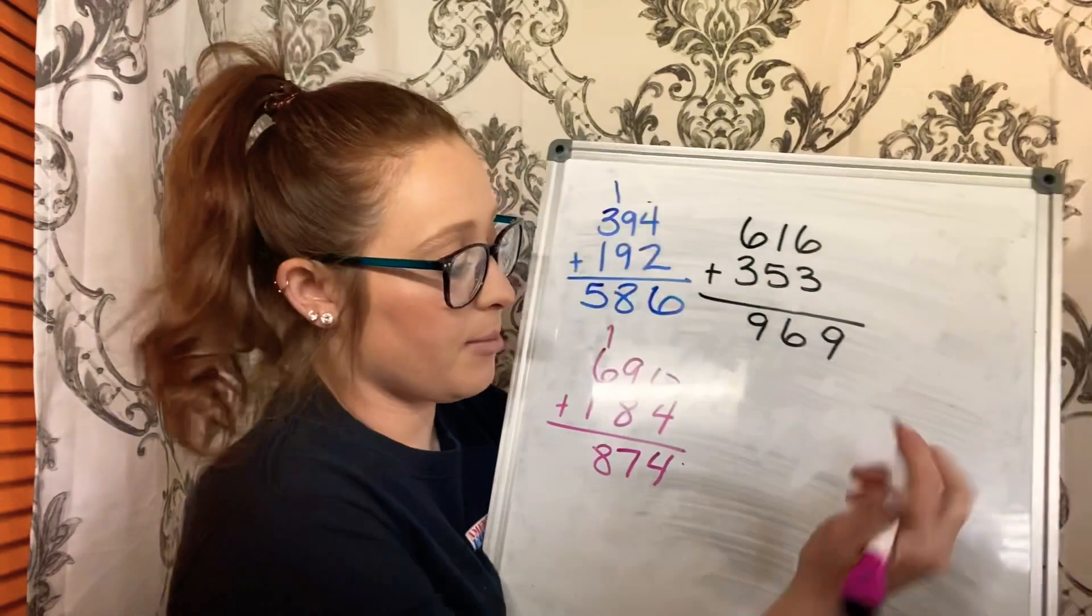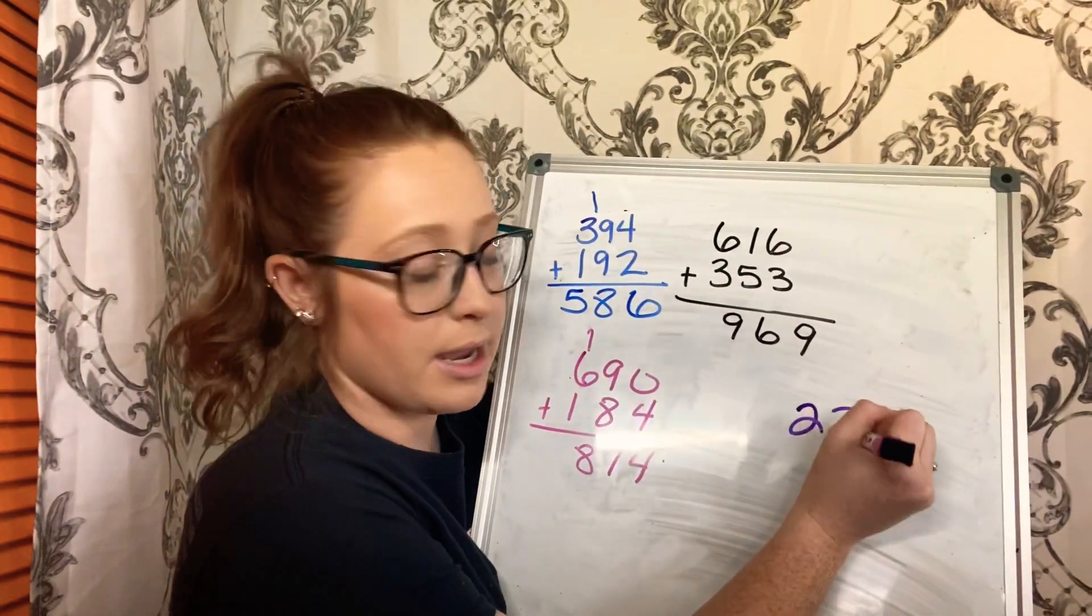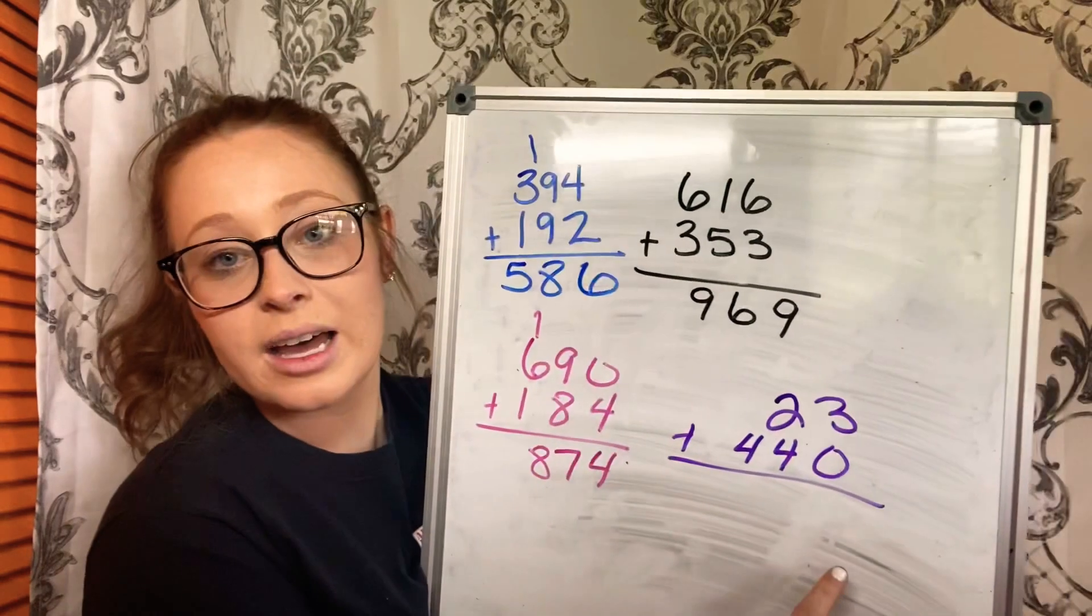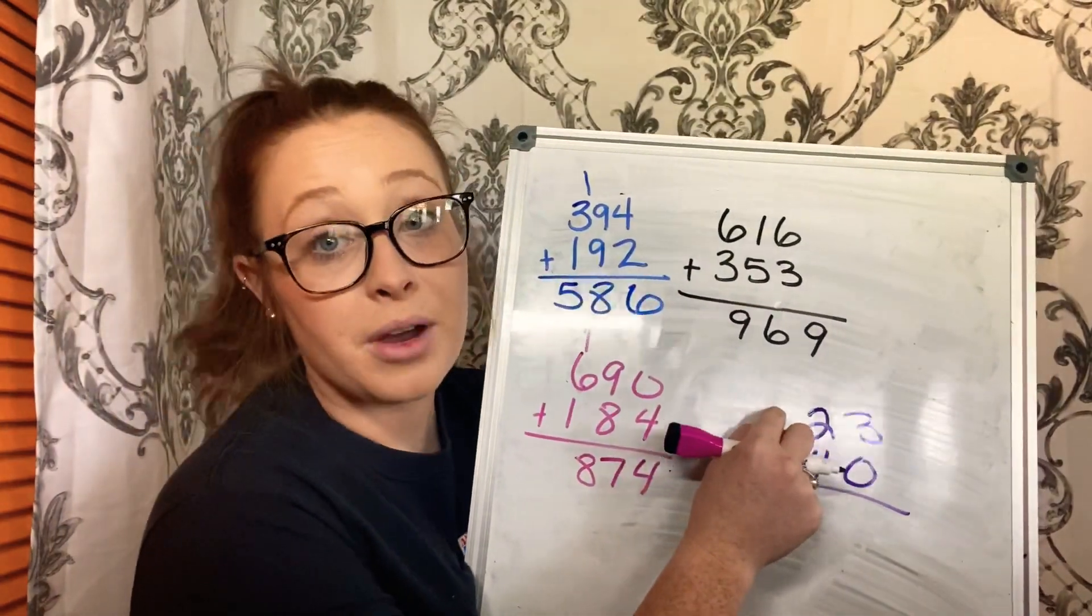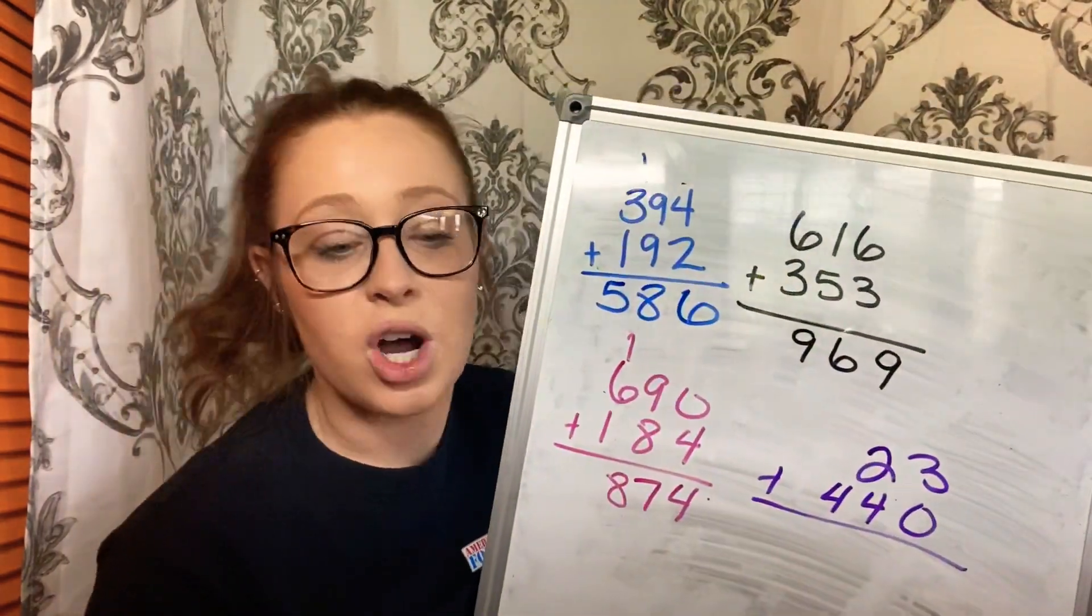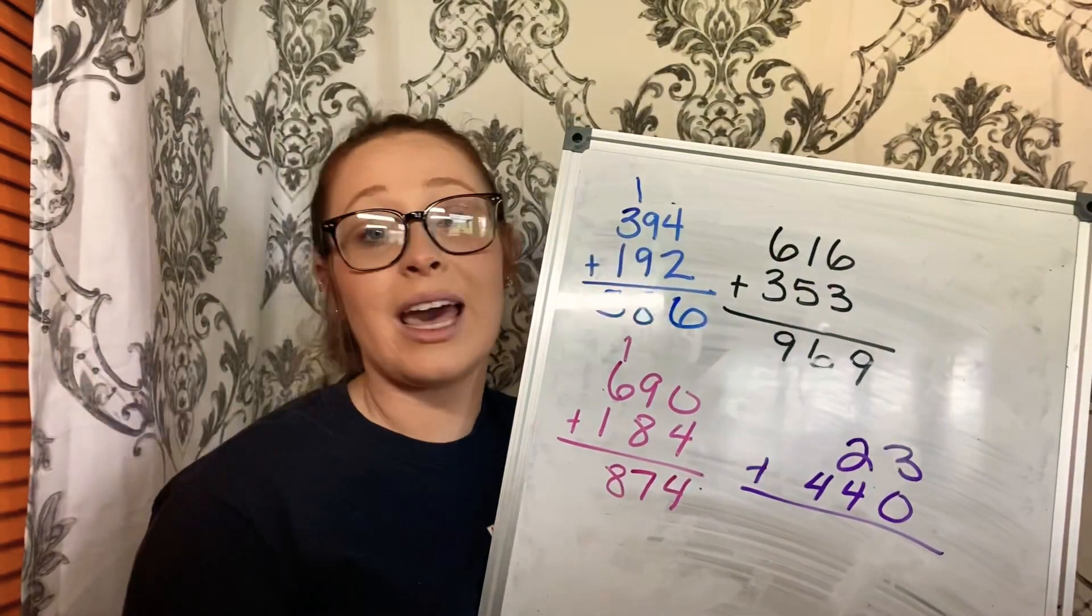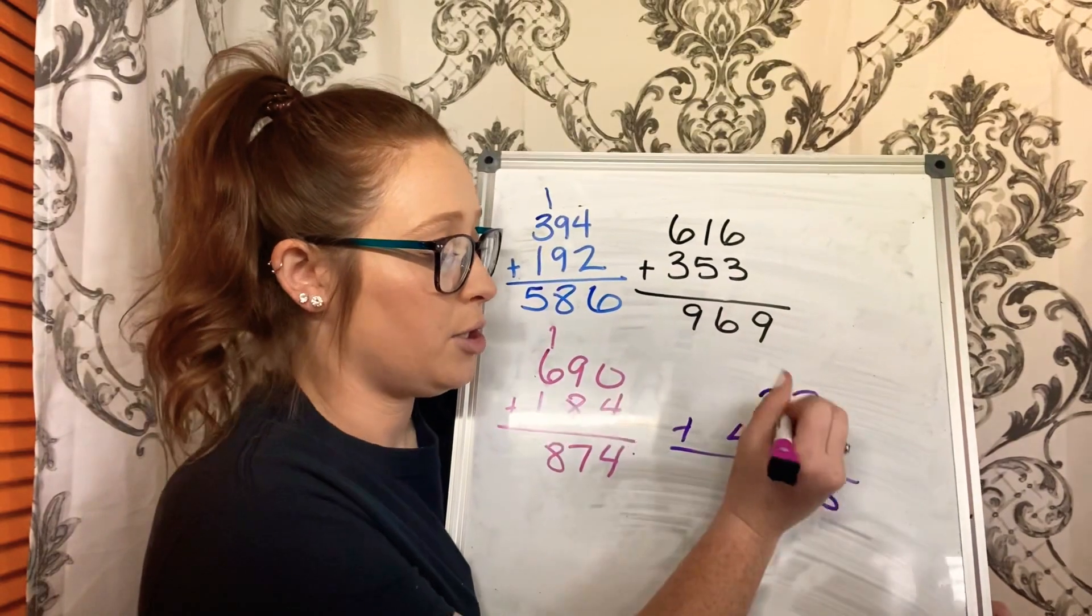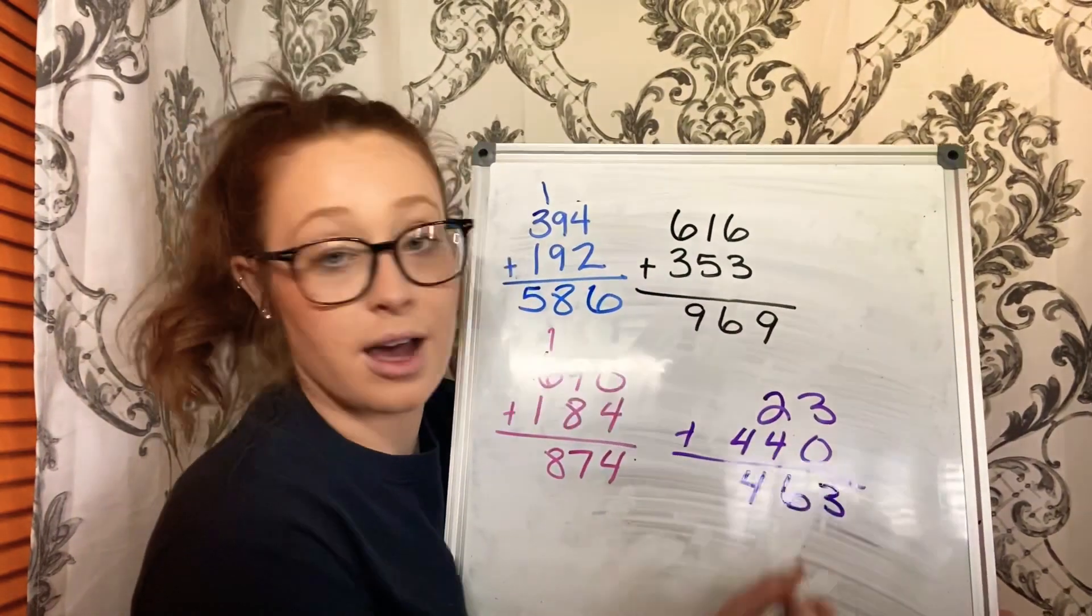Alright, now the last one I'm going to do with you. I have 23 plus 440. Now, look how this is set up. There is not a number above that 4, and that is okay. It's already lined up for you. You just have to add them. So, 3 plus 0 is 3, 2 plus 4 is 6, and then I'll just bring that 4 down.